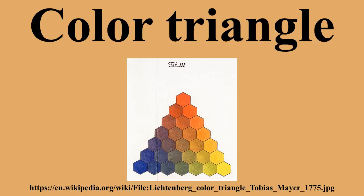Before the theory of additive color was proposed by Thomas Young and further developed by James Clerk Maxwell and Hermann von Helmholtz, triangles were also used to organize colors — for example, around a system of red, yellow, and blue primary colors.